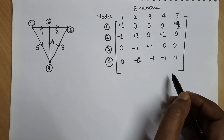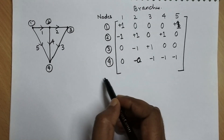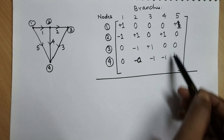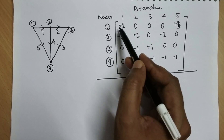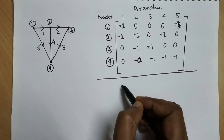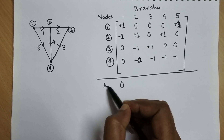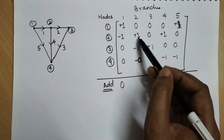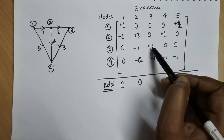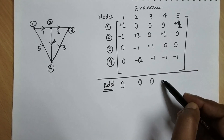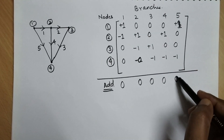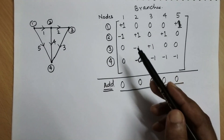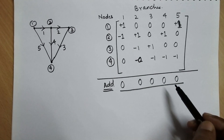This matrix is called the incidence matrix. A key property of this incidence matrix is that if you add any column, you will get zero. For example, column one: plus one and minus one gives zero. Column two: plus one and minus one gives zero. Column three: plus one and minus one gives zero. Columns four and five also sum to zero. So the property is: the sum of the elements of any column in the incidence matrix is zero.